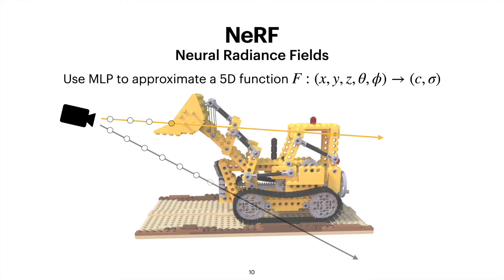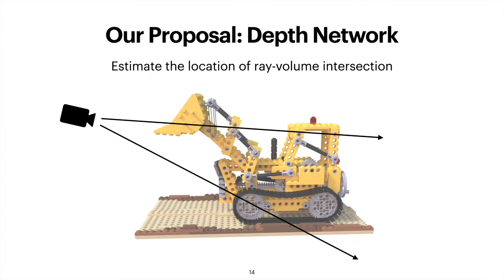When the ray hits the surface, the whole ray — and therefore the pixel — will acquire the color of the point of intersection. However, as you probably noticed, we had to sample a lot of points until we hit the surface, and therefore there is a lot of inefficiency in this rendering process. That's where our solution comes in: a depth network that proposes short ranges along the ray where it thinks the possible ray-volume intersection will happen, allowing us to sample only these short ranges and decrease the number of samples.